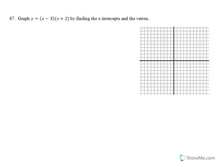In 67, we need to find the x-intercepts and the vertex and graph. To find the x-intercepts, plug in 0 for y. So I have 0 equals x minus 3 times x plus 2.